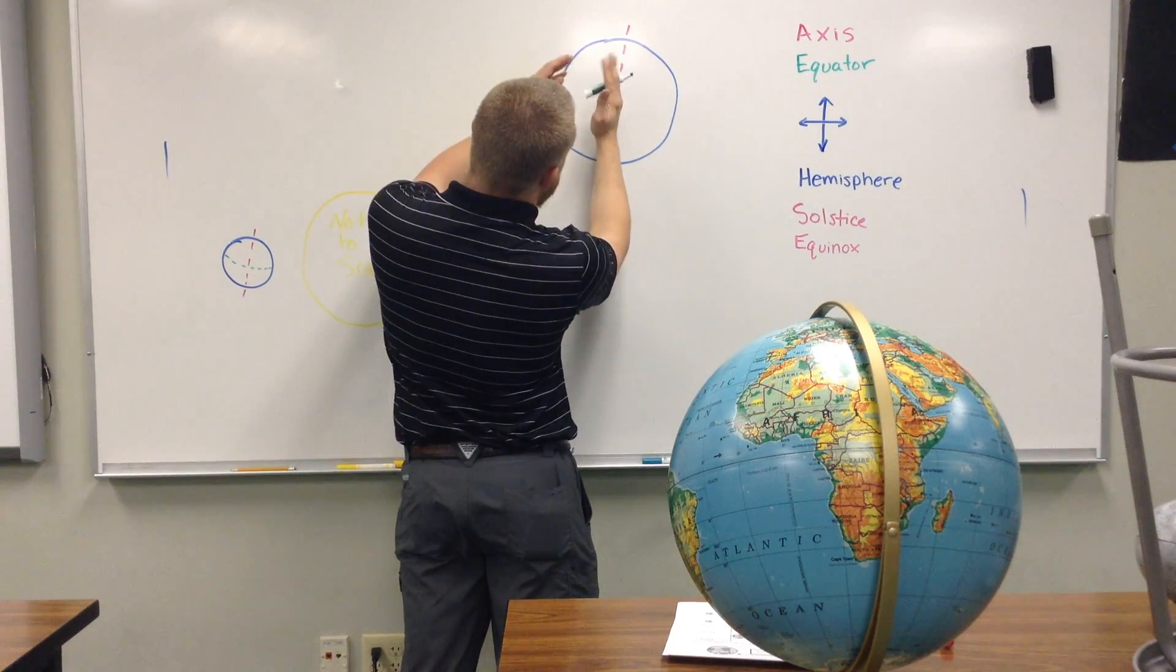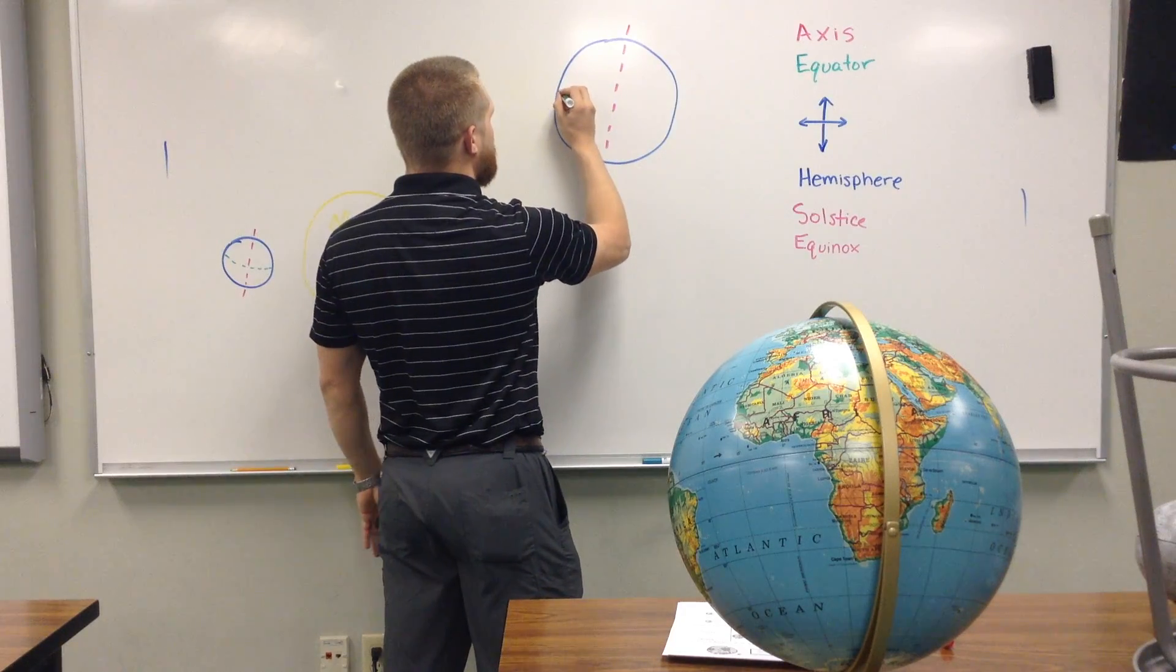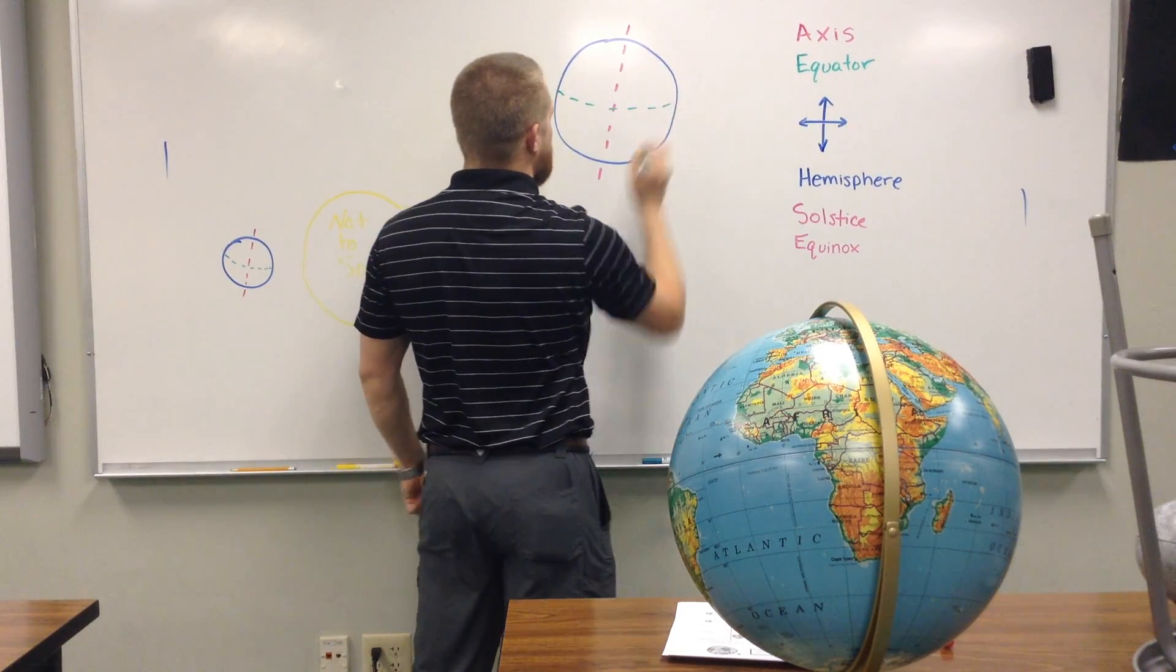So, if our earth spins like this, then instead of having the equator be this way, it's also going to be a little bit tilted. So, there's our equator.